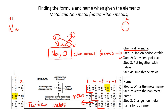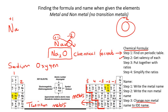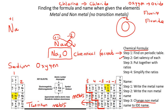Now we're going to learn how to name it. Step one: write down the name of the metal — Na is sodium. Step two: write down the non-metal name — oxygen. Step three: change the non-metal to the IDE name. So instead of oxygen, you say oxide, giving us sodium oxide. That's how you do it when you have a metal and a non-metal. Let's do another example.